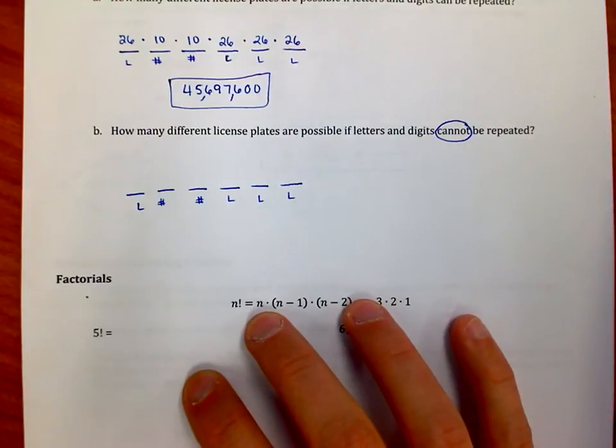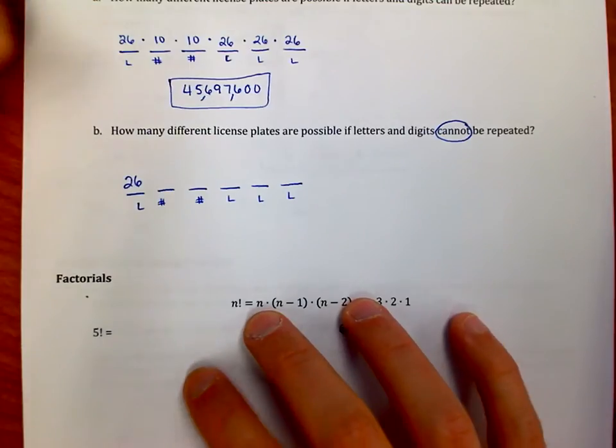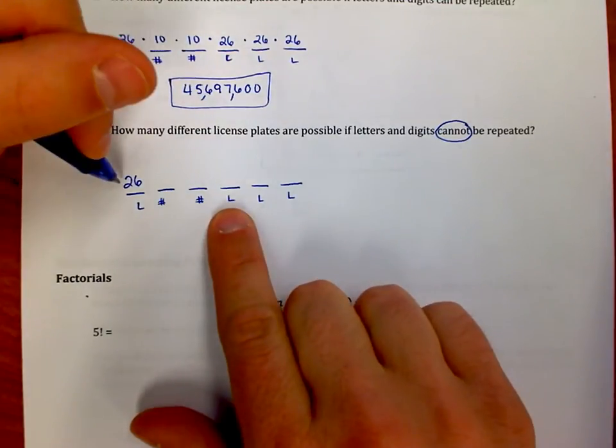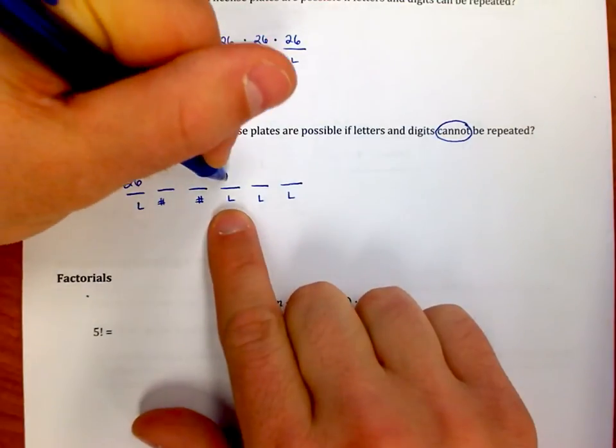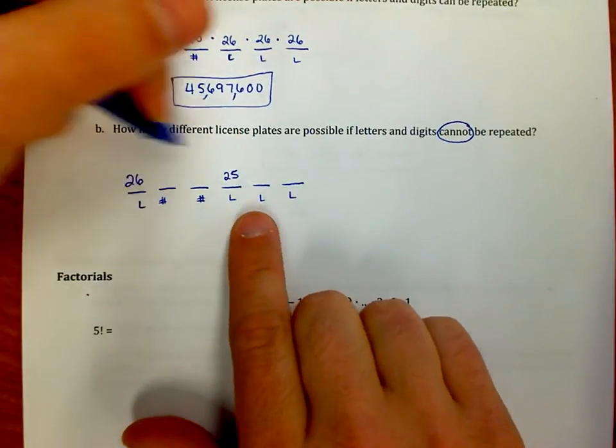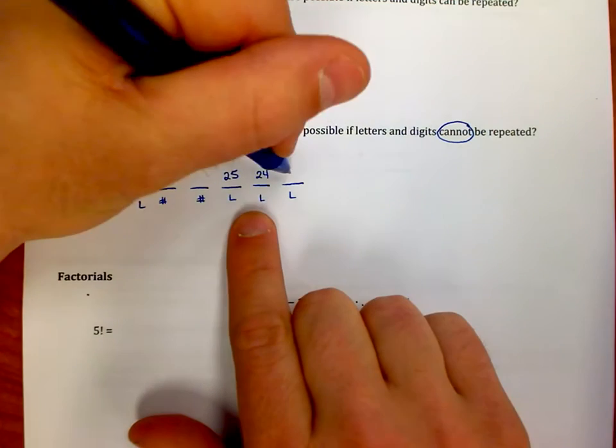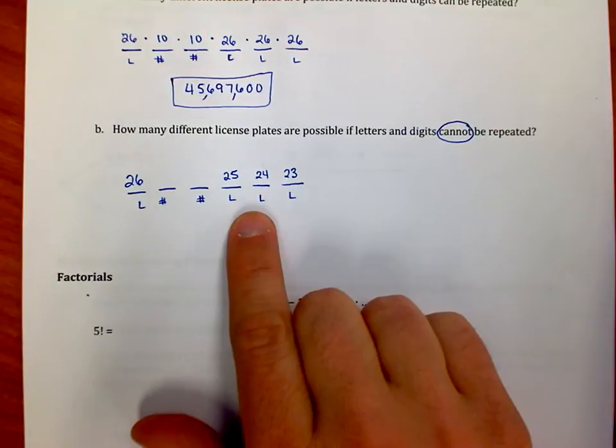If the letters and digits can't be repeated, what happens is this. The first time I use a letter, I have 26 choices. But the second time I have a letter, let's say that this is an A, that means the A is gone. That means I only have 25 choices remaining for the second letter. Now there's two choices gone, which means I only have 24 spots remaining, 24 choices. And the last spot, same rule, I only have 23 choices.